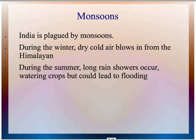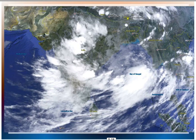During the winter, cold air blows in from the Himalayan mountains and it is very dry, very cold, not a lot of rain. During the summer, however, long rain showers occur, watering crops, but could lead to flooding. Being that I'm recording this from Orlando and that you guys are from Florida, this image should bring back some memories of our hurricanes. As you can see, the monsoon here is very large and quite intimidating.